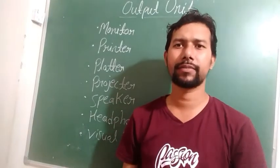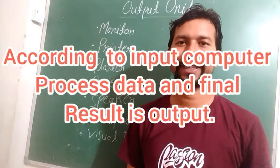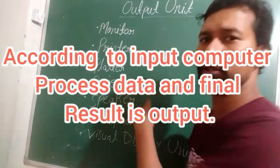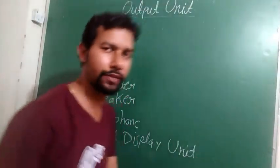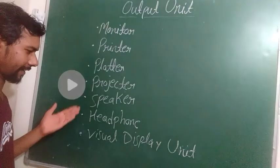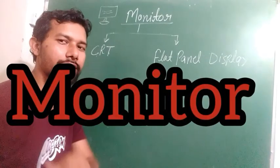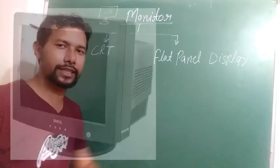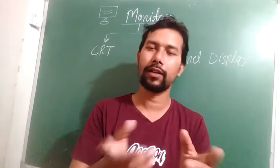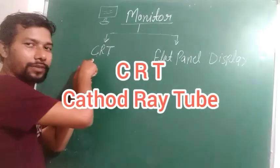The third part of computer system is the Output Unit. According to your input, the result you receive is called output. The computer system uses output devices to deliver this output. We have various output devices: monitor, printer, plotter, projector, speaker, headphones, and visual display unit. Monitor is the primary output device — it looks like a TV and is responsible for displaying video and visuals. Monitors are of two types: CRT, which stands for Cathode Ray Tube, and flat panel display.